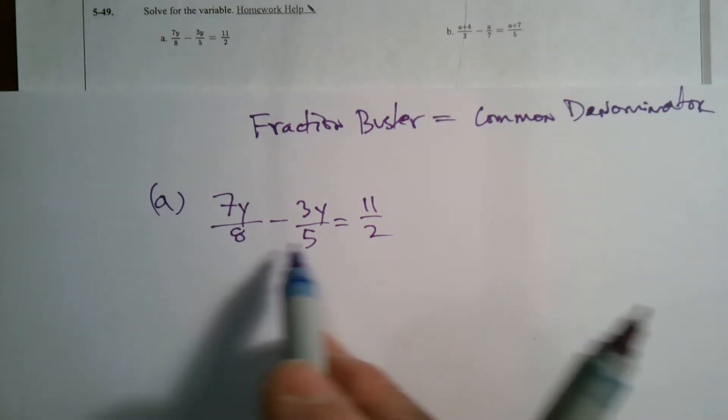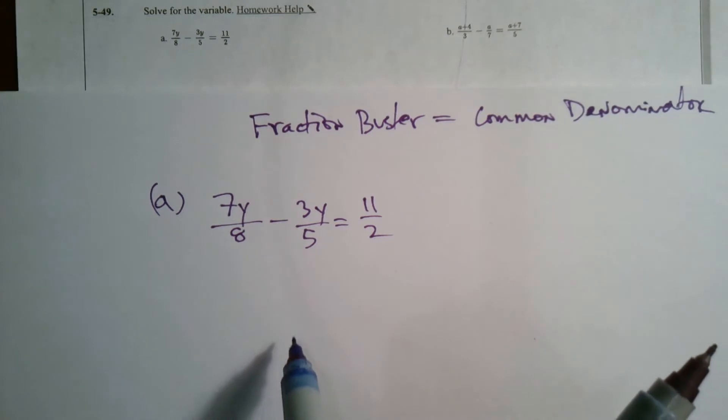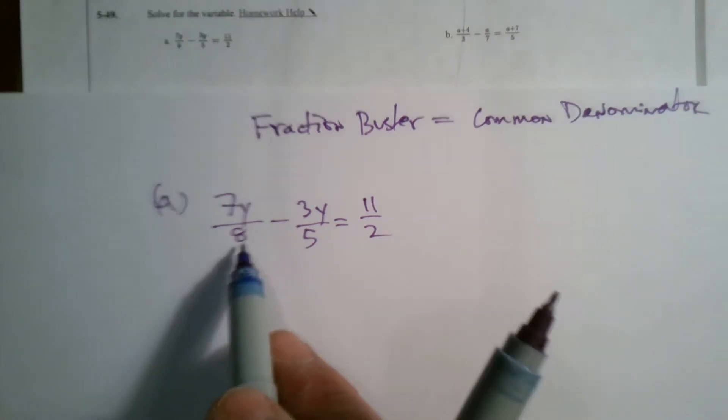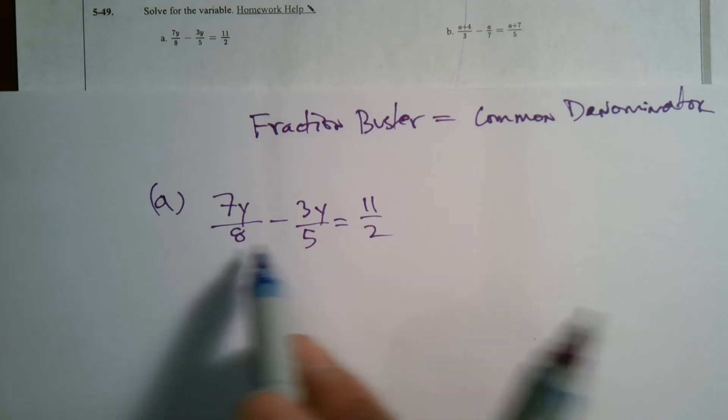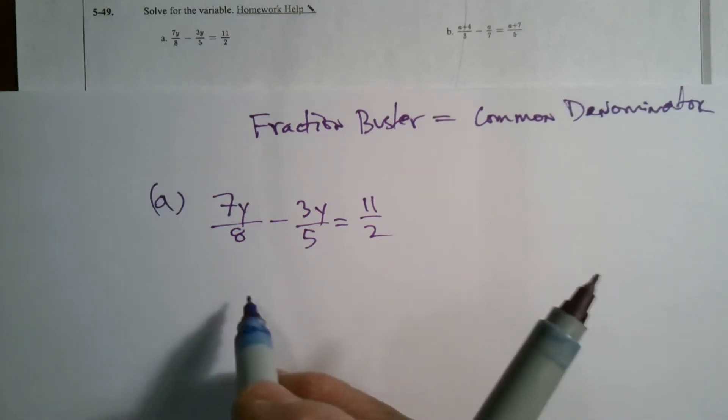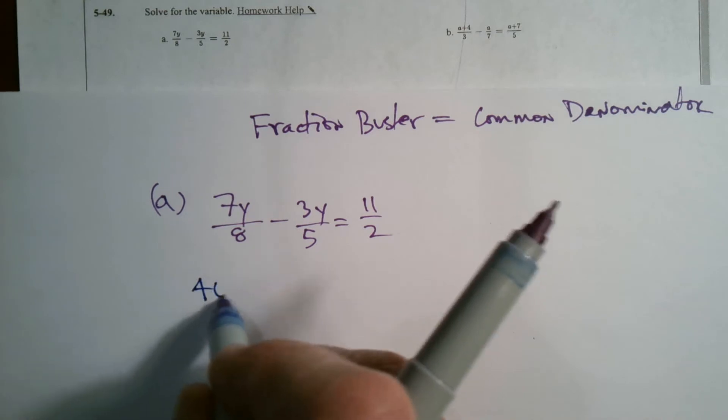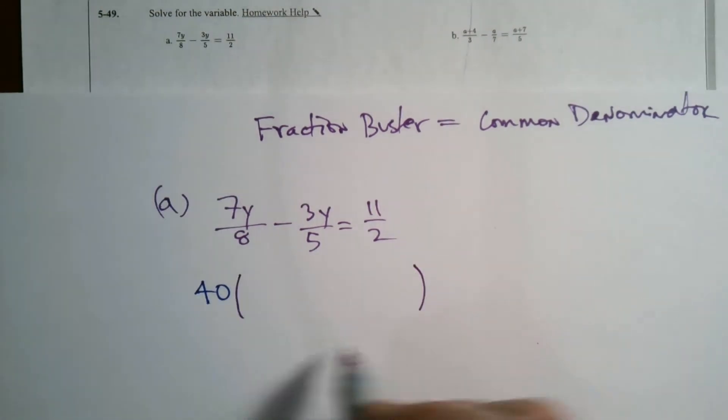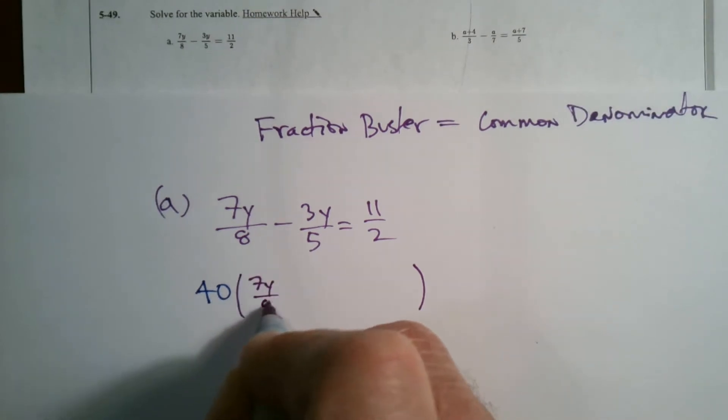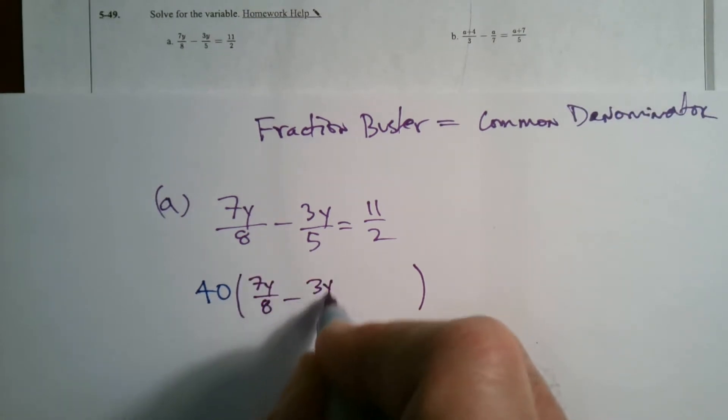Let's see, 5 times 8 is 40, so that's going to have to be 40, and then 2 goes into 40. So my fraction buster in this case is going to be 40. So I'm going to take and multiply this entire equation - I'm going to rewrite it just so you can see the steps - by 40.